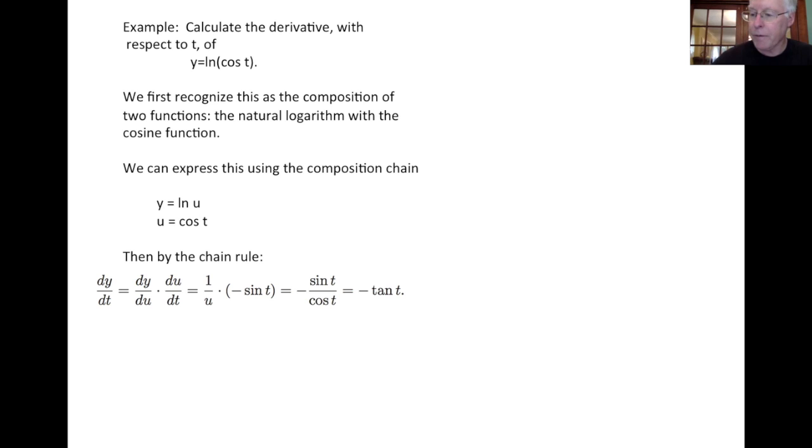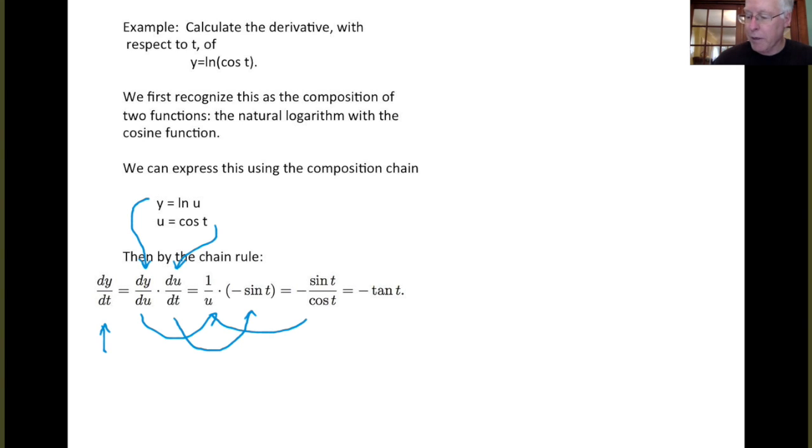Our chain rule says that once we have a composition chain like this describing a function, we can compute the derivative, dy dt, by differentiating each line of this expression. So y equals log of u, we want to find dy du with respect to u, and then du dt. Because y equals log of u, that derivative is just 1 over u. u was cosine t, the derivative of cosine is minus sine. Now, finally, change the u back to what it was in the beginning, cosine t, and our derivative simplifies to minus tangent of t. So the derivative of log of cosine t is minus tangent of t.